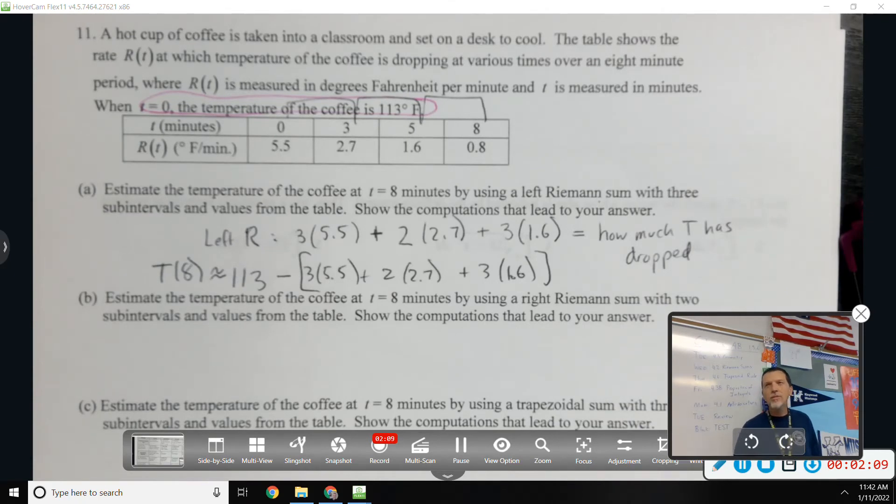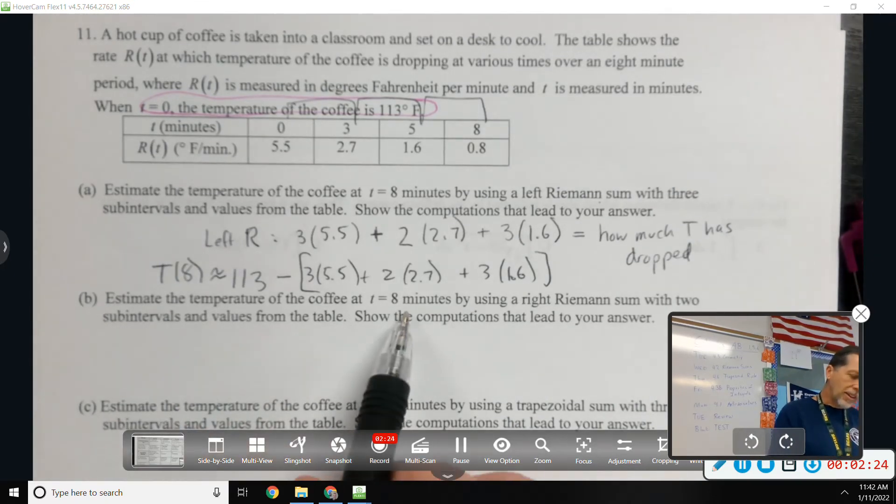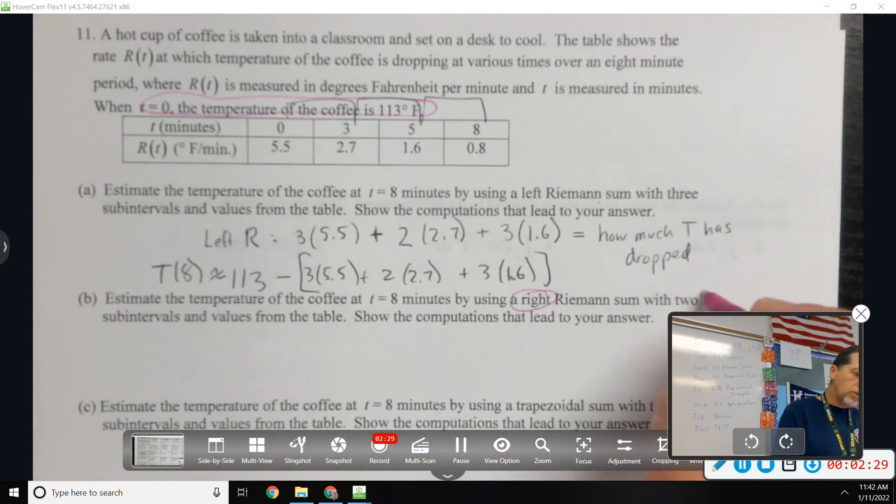That is roughly analogous to that word problem I mentioned earlier, where it's not exactly like what you've done, but it involves a Riemann sum and it explains what to do. Part B. Estimate the temperature of the coffee at T equals 8 by using a right Riemann sum with two subintervals.